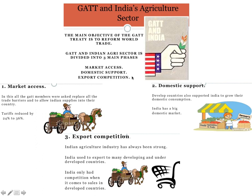GATT's impact on the Indian agriculture sector is divided into three main phases: market access, domestic support, and export competition. For market access, all GATT members were asked to replace trade barriers and allow Indian suppliers into their countries, reducing tariffs by 24 to 36%. GATT also supported India for domestic cultivation of agricultural products — India being a big domestic market due to its large population. It also helped India with exports, as the Indian agriculture industry has always been strong and exports to many developing and underdeveloped countries.